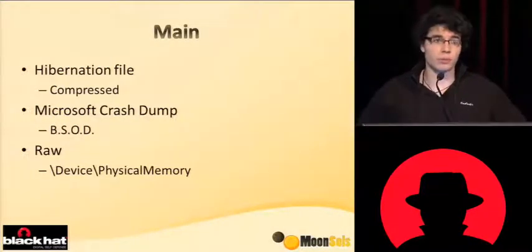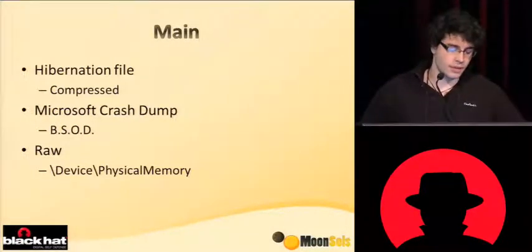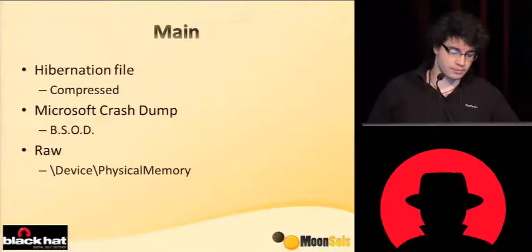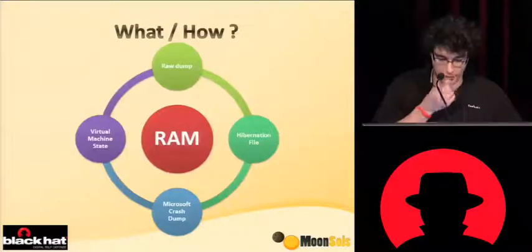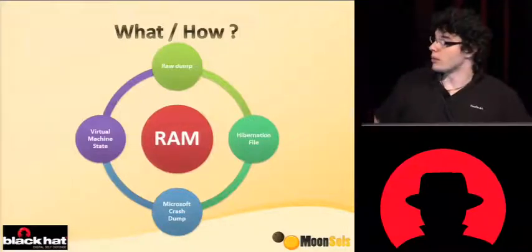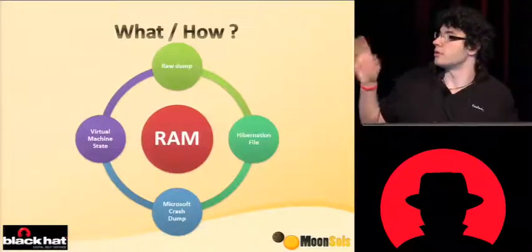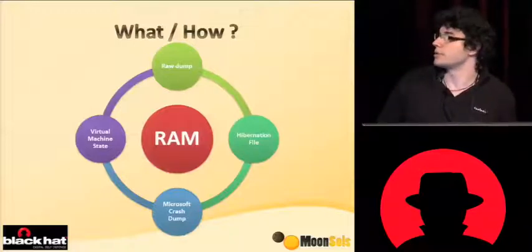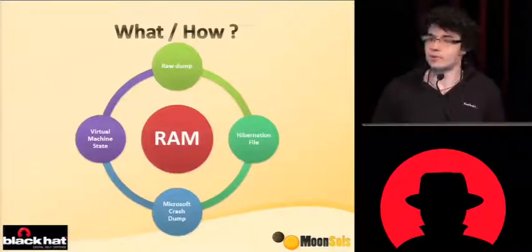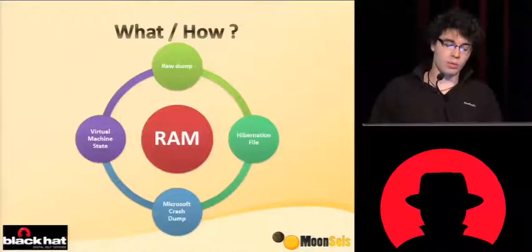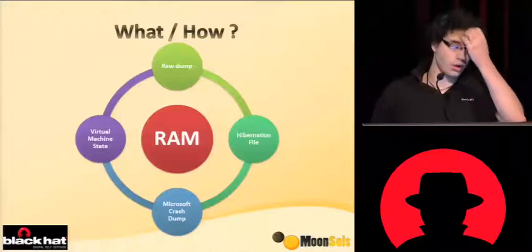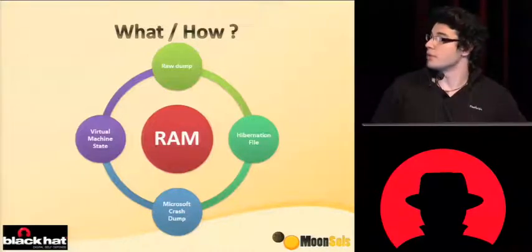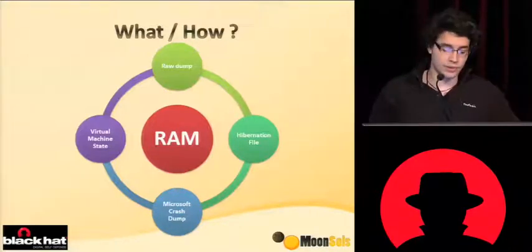Especially for people who are looking for bugs, kernel developers, or kernel troubleshooters. We are going to focus only on the three circles: the raw dump, the hibernation file, and the Microsoft crash dump. We will see how to get a Microsoft crash dump from either a raw dump or a hibernation file.